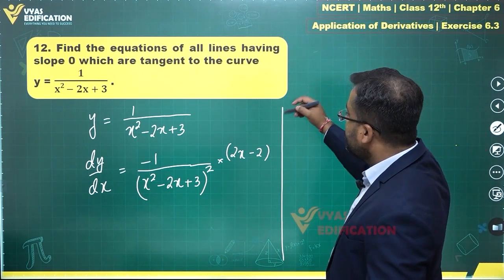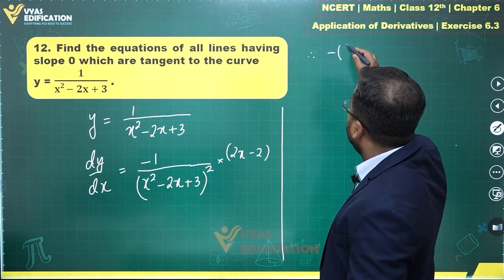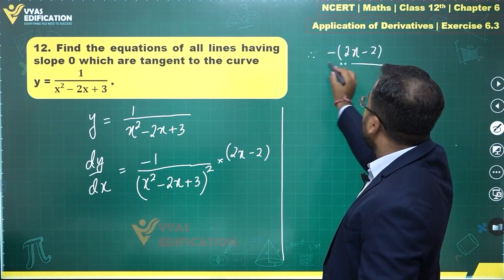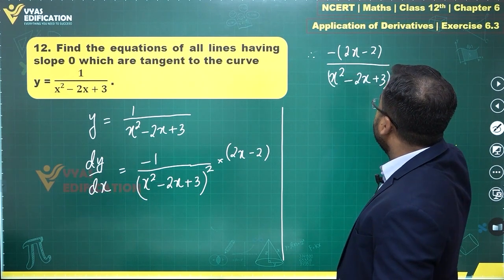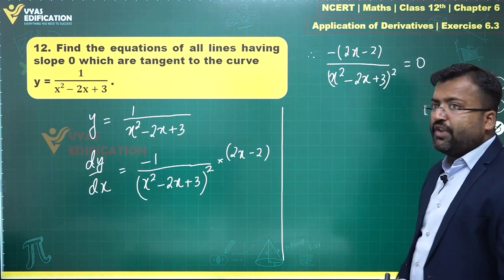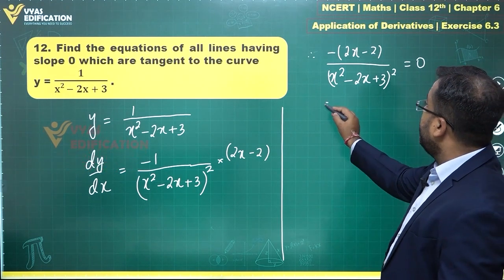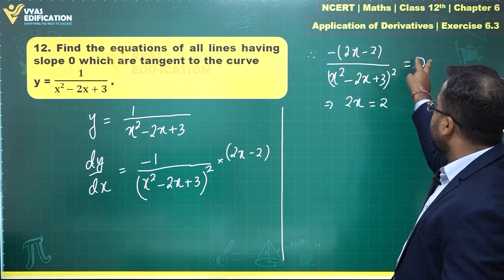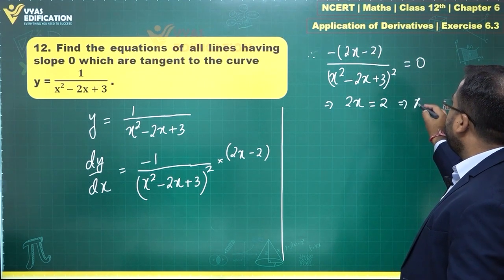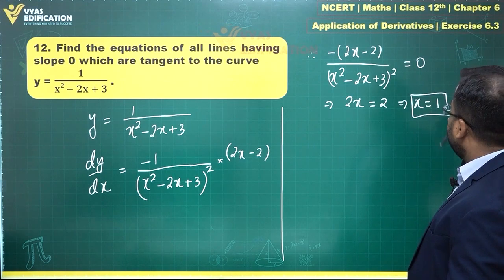Therefore, minus of 2x minus 2 over x squared minus 2x plus 3 squared is equal to 0. On equating this equal to 0, you get 2x equals 2. This whole thing will go over there and becomes 0, therefore 2x equals 2 or x equals 1.